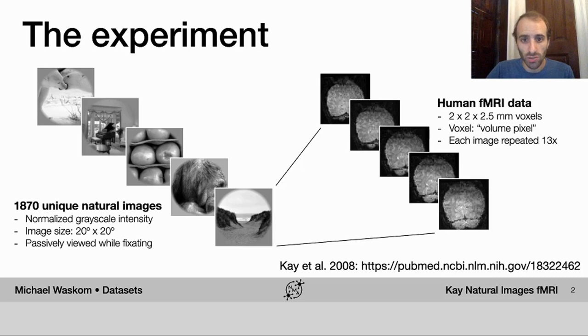The fundamental unit of measurement in fMRI is what's called a voxel, which you can think of as the volume analog of a pixel. Each voxel in this data set is about two millimeters on each side. So remember that that's going to correspond to the aggregate activity of tens of thousands of neurons.